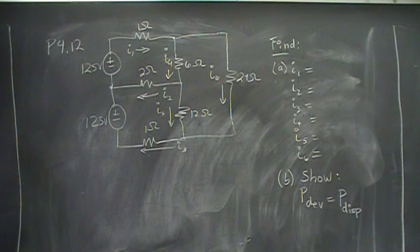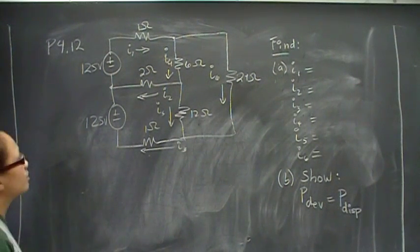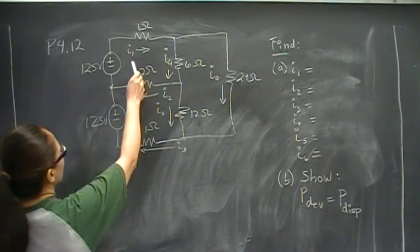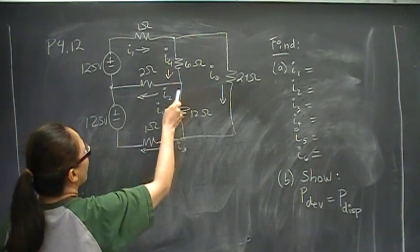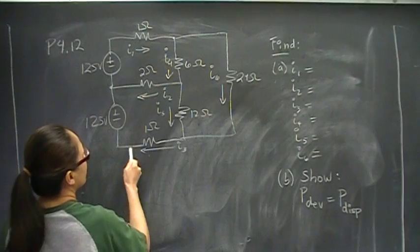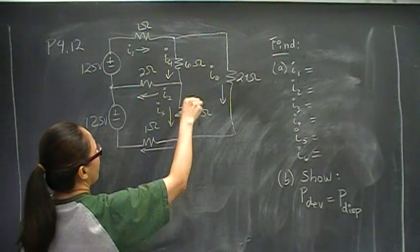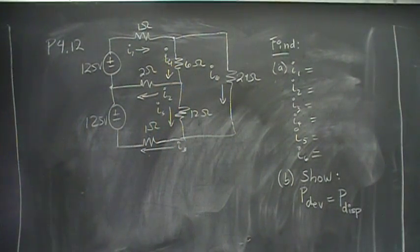It's a DC model of a residential power line system, and we want to find the line currents I1, I2, I3, I4, I5, and I6 for part A. And then for part B, we want to show that power developed is equal to power dissipated.